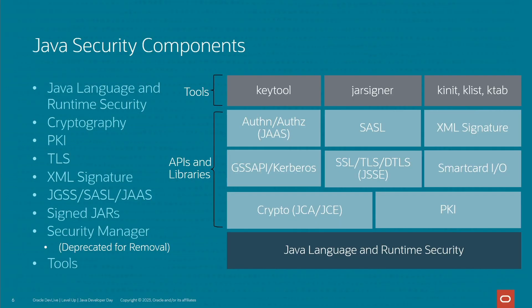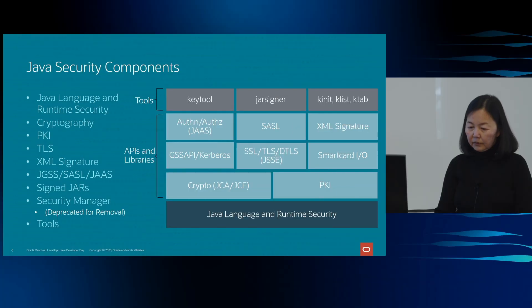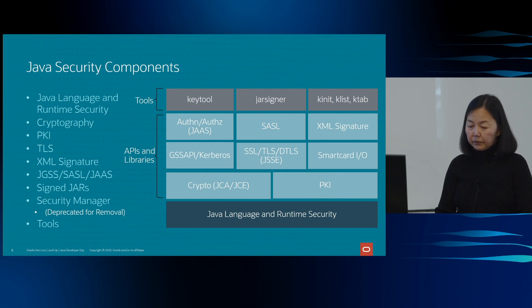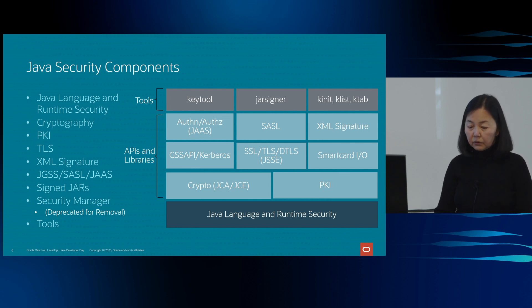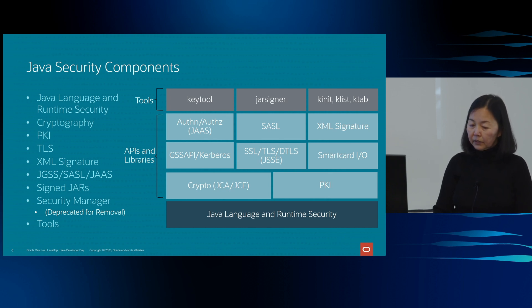Java security consists of language and runtime security functionality along with a comprehensive set of APIs and implementations that cover many different areas. The high-level abstractions are built on top of lower-layer concepts, as you can see in the brick wall diagram here. At the bottom layer, the Java language was designed to be type-safe and easy to use. It has features like memory management, garbage collection, and range-checking on arrays.